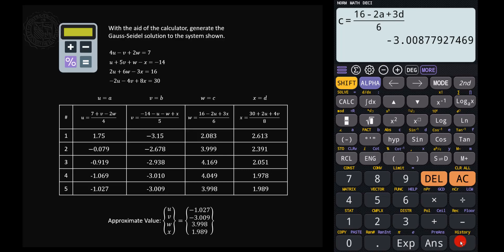So this is now the fifth iteration values, and we were able to come up with the approximate value, which is u is equal to negative 1.027, v is equal to negative 3.009, and w is equal to 3.998, and x is equal to 1.989. But if you continue the iteration process, later, after, let's say, 10 iterations, you'll get the value with a very minimal error. Okay, so that's how you use the calculator by Gauss-Seidel method.